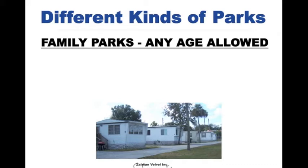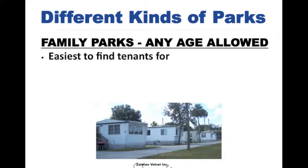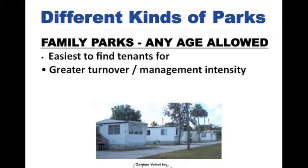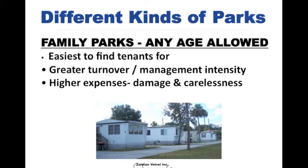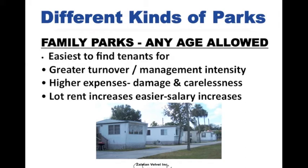The first kind of park is a family park, where you allow families and children — basically there are no age restrictions whatsoever. It is the easiest park to find tenants for, and unfortunately there is also greater turnover and a lot more management intensity. Family parks, compared to over-55 parks, have probably three to four times the amount of management problems and intensity. Family parks do have higher expenses due to damage and carelessness, but lot rent increases are easier.